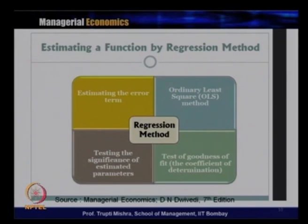Typically these four stages are followed in the regression method when estimating a and b. First, we estimate the error term through the ordinary least square method. Then, after getting the estimated parameters, we test their significance — what is the level of significance of these estimated parameters. Then we do the test of goodness of fit to understand the overall explanatory power of the model, or the overall explanatory power of the relationship between the dependent variable and the independent variable.